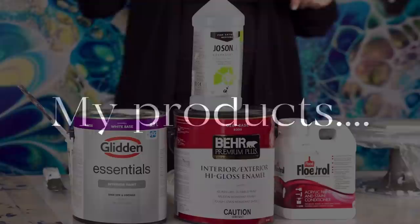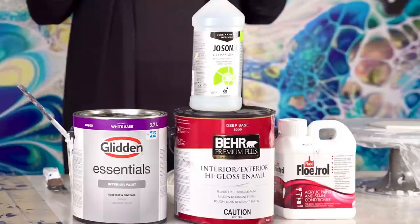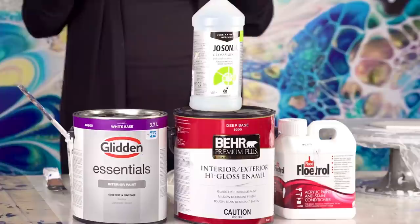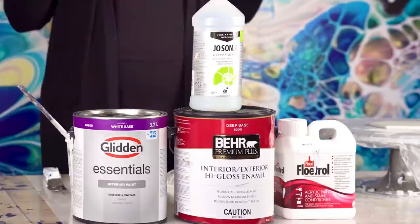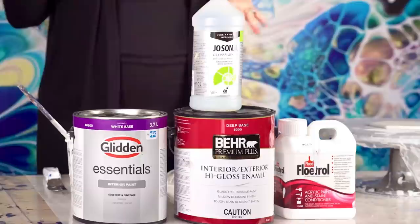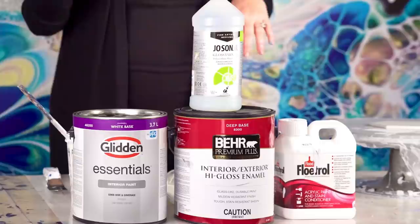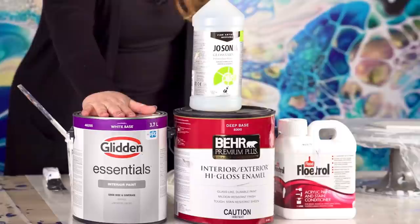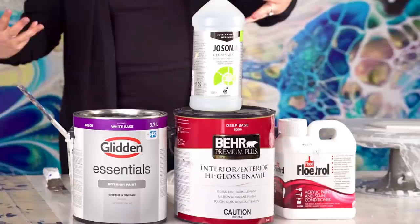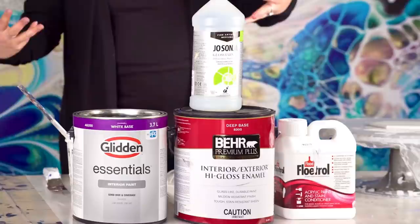Products are so important for the bloom because every layer needs to be at a perfect consistency for it to work. I've narrowed it down to very few simple products that I use in Canada. My pillow paint is Glidden Essentials Eggshell. The reason I love her is because she's not too thick, not too thin, not too many bubbles. She's really the perfect base for me.